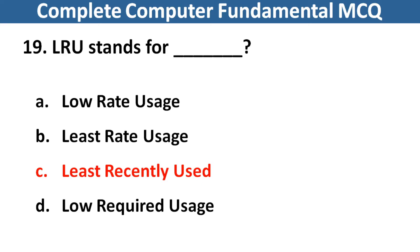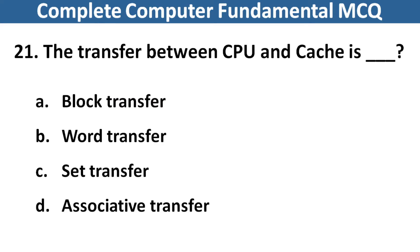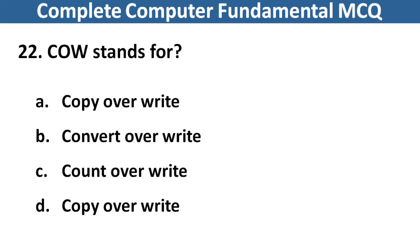Which of the following is an efficient method of cache updating? Right answer is option A, Snooping Writes. Next question: The transfer between CPU and cache is dash dash. Right answer is option B, Word Transfer. Next question: COWO stands for? Right answer is option D, Copy Over Write.